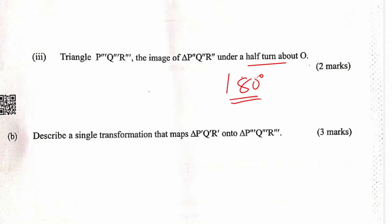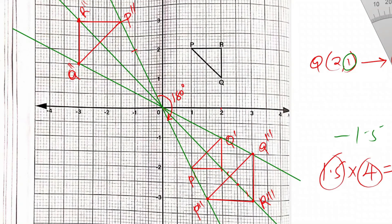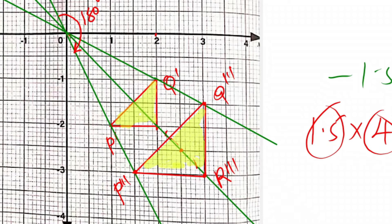We need to find which transformation maps the triangle P'Q'R' (shaded in yellow) to triangle P'''Q'''R'''. When you compare P'Q'R' to P'''Q'''R''', you notice the triangle has been enlarged — it is clearly an enlargement. To describe an enlargement, you must give the center of enlargement and the scale factor of enlargement.